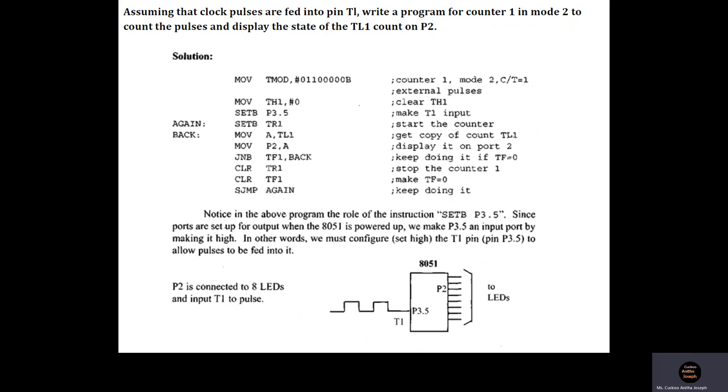It is an 8-bit mode. TL1 will count, TH1 will hold the initial count, so we have to initialize TH1 with the initial count. And we are required to count the number of pulses. In the natural world, all counting operations will be from 0. It will start from zero; we will count as 1, 2, 3, 4, etc., so the initial count should be 0.